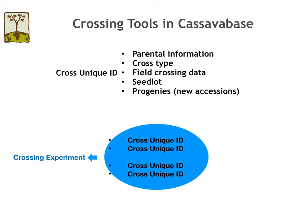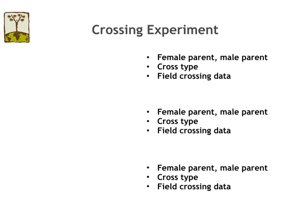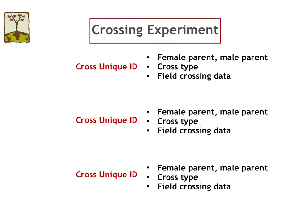How you want to group crosses in a crossing experiment is up to you. Crosses having the same parental genotypes can also be grouped in a family. Each level of data organization has its own details page. Crossing experiment is the top level of data organization in CassavaBase. Crossing data from InterCross will be sorted based on female and male parental combination. Parental information, cross type, as well as all of the field crossing activities for each cross combination will be linked to a Cross Unique ID in CassavaBase. All of the data will be aggregated within a crossing experiment.